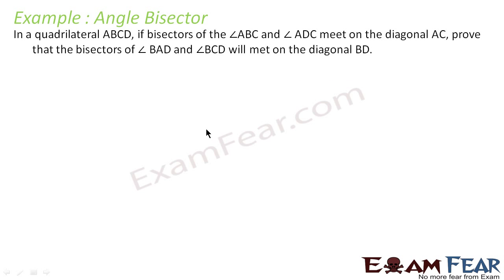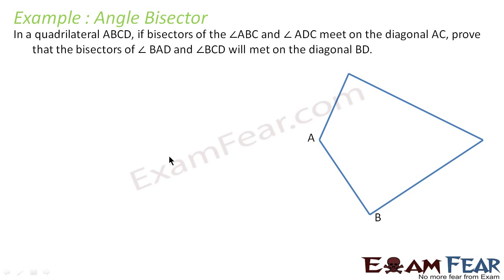In a quadrilateral ABCD, the bisectors of angles ABC and ADC meet on the diagonal AC. We will prove that the bisectors of angles BAD and BCD will meet on the diagonal BD. Let's draw the quadrilateral ABCD and mark the points A, B, C, D. Now let's first draw the diagonal AC.